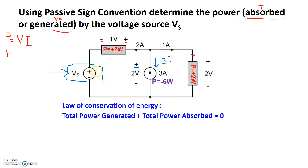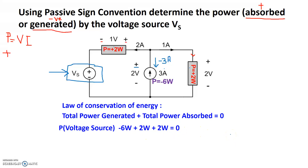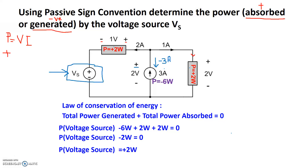To do that, let's say the power of this voltage source — we don't know if it's absorbed or generated — plus the power absorbed by this element, plus the power absorbed by this element, plus the power generated by this source, should equal zero. So: Vs power minus 6 watts plus 2 watts plus 2 watts equals zero. Simplifying, the power of the voltage source equals plus 2 watts. The plus sign means that power is being absorbed, so this voltage source is, in fact, absorbing 2 watts of power.